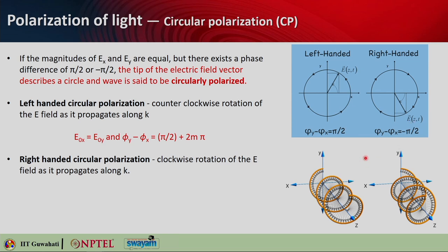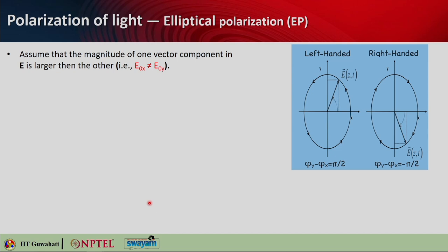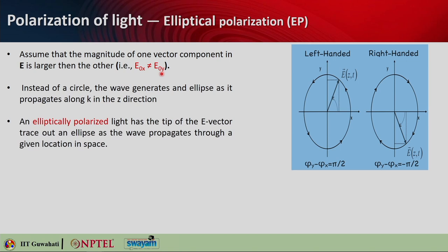On the other hand, if you see clockwise rotation of the electric field along the propagation direction, we call it right circular polarization. For right-handed circular polarization, u_x equals u_y and the phase relation φ_y minus φ_x equals minus π/2 ± 2mπ. The same concept applies for elliptical polarization — the only difference is that u_x and u_y are not equal.